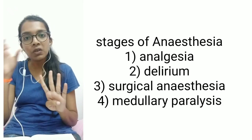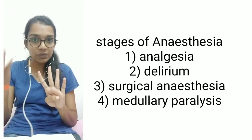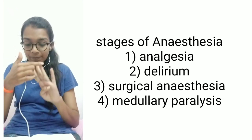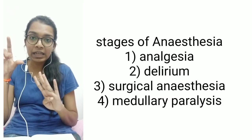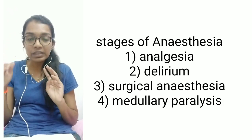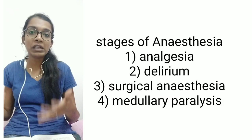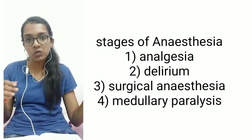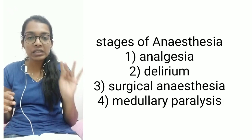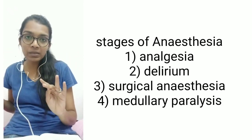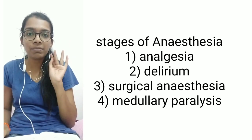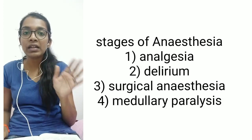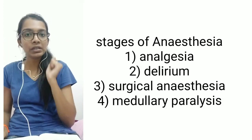In Stage 3, at the end of plane 1, the eyes become fixed. In plane 2, there is loss of corneal and laryngeal reflexes. In plane 3, the pupils start dilating. In plane 4, there is intercostal paralysis and the person starts abdominal respiration. Stage 4 is medullary paralysis, where there is cessation of breathing and circulation, and the person dies.